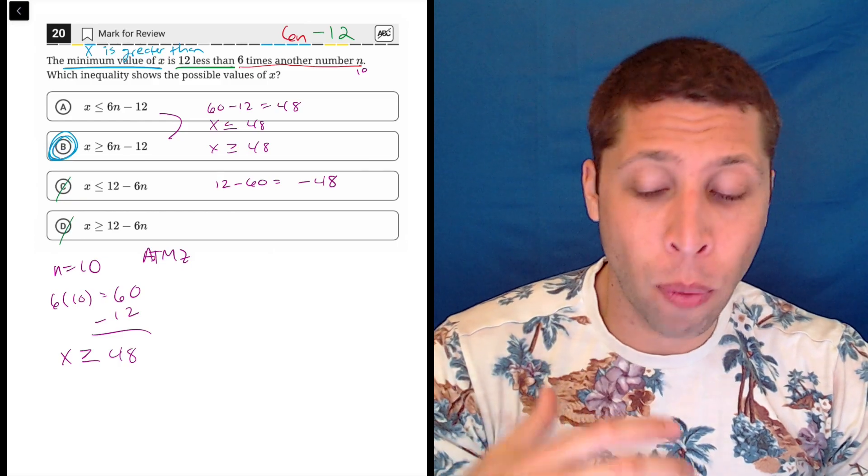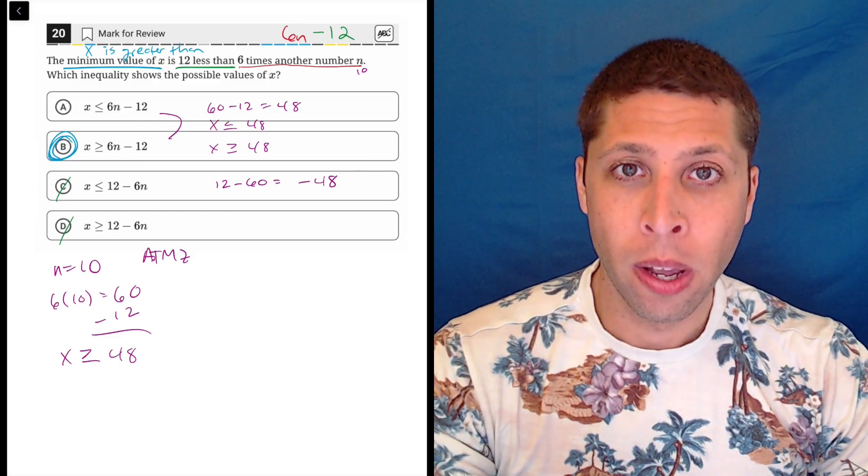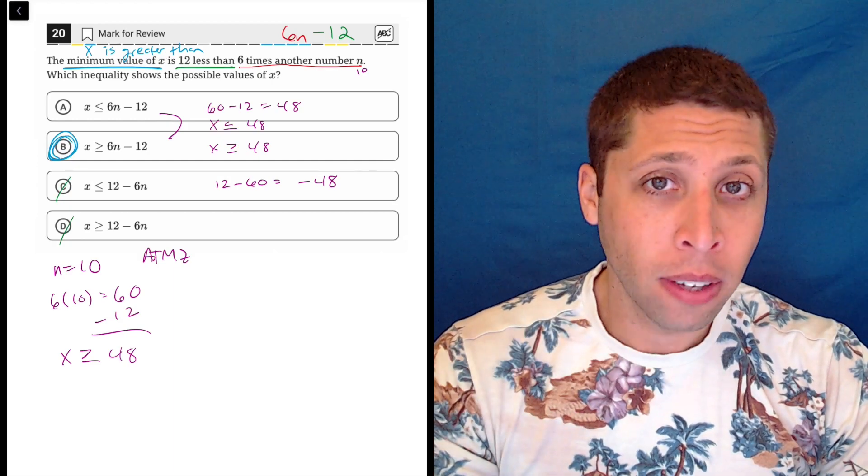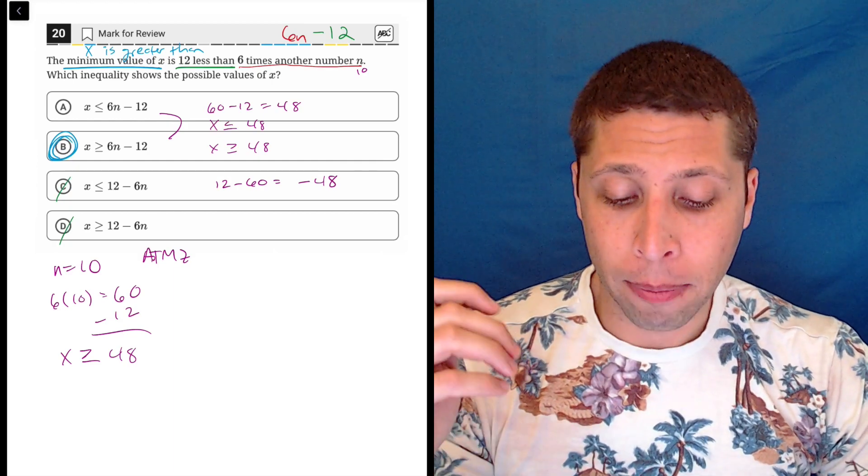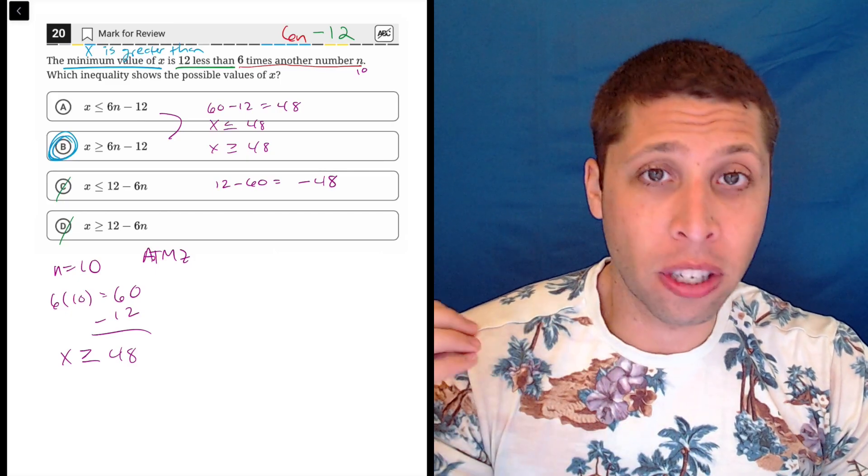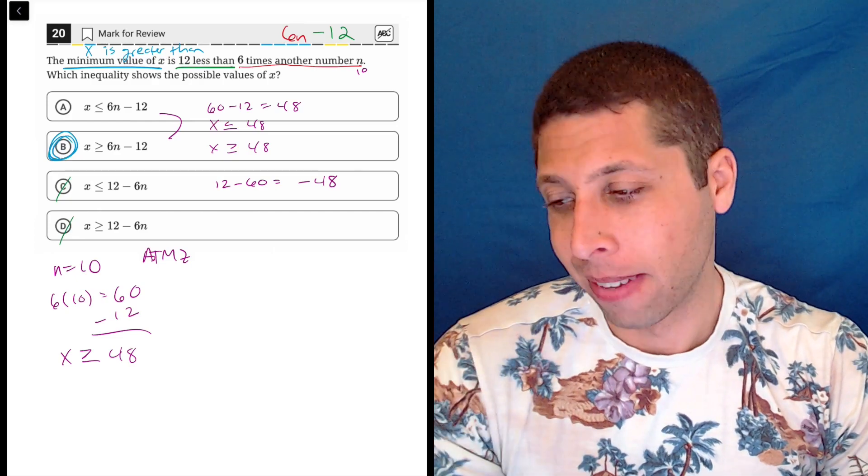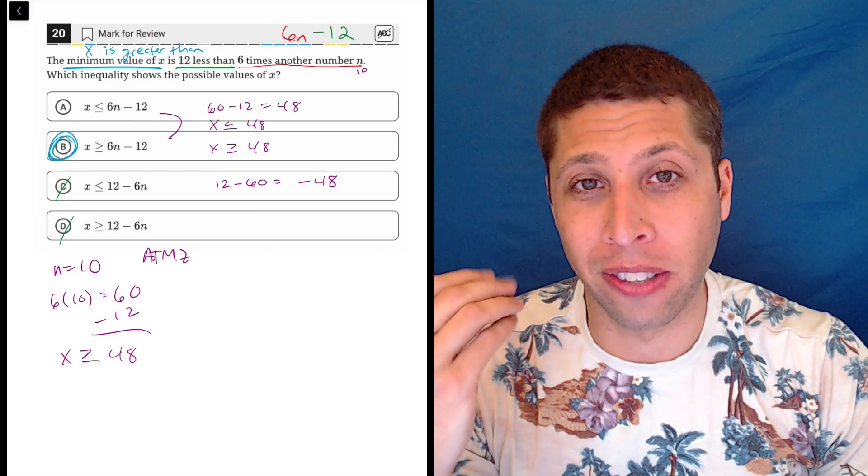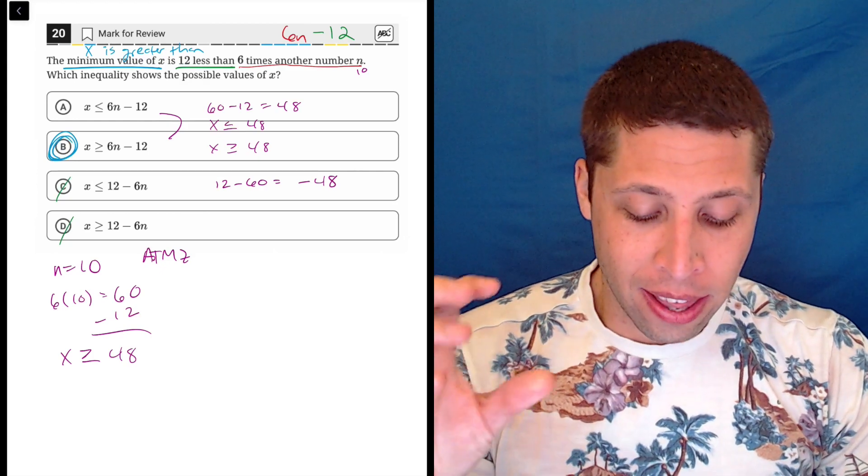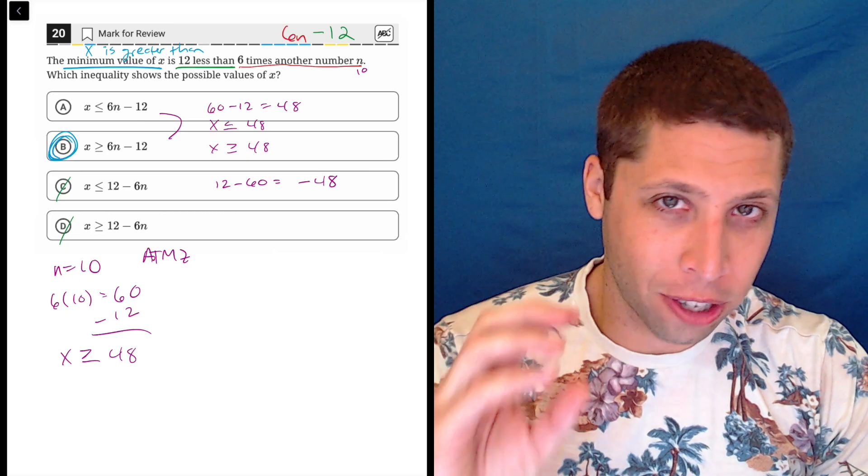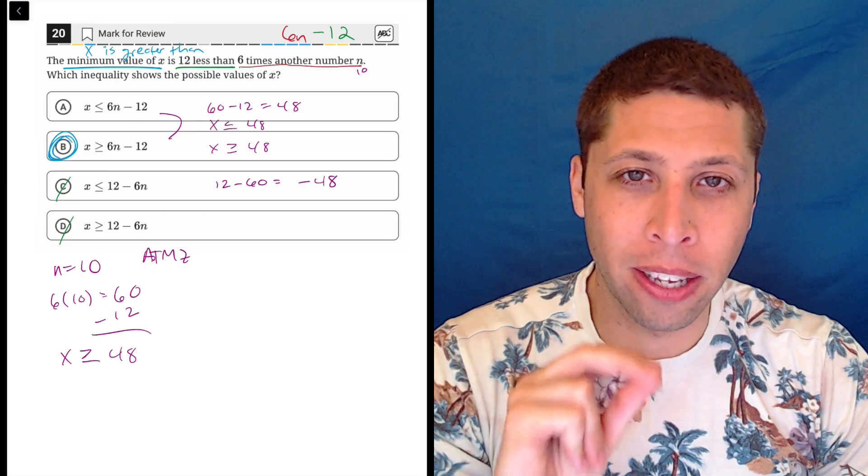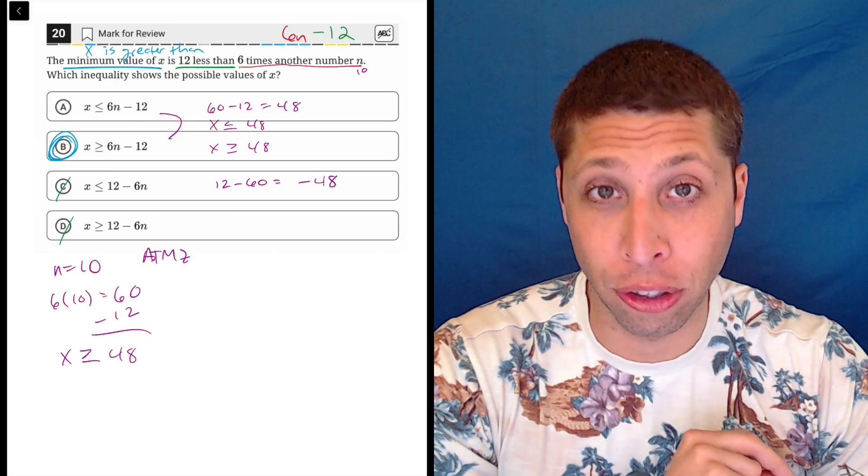This is just a general idea. When algebra is confusing you, a lot of times we can just put a number in place. Sometimes it's to solve, sometimes it's to guess and check. But other times it's just to understand the words a little bit better. And it's maybe even just a temporary substitution so we can eliminate some answer choices that don't match with our expectations. So I think in this case, the sentence is easier to understand with a number in there so that we don't make the mistake of putting the negative in the wrong spot by doing the subtraction incorrectly.